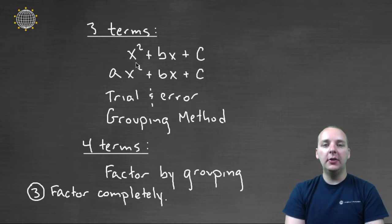And so for either of these, you can either use the trial and error method, where you basically just set up your empty parentheses and try to think about what would foil to give you these trinomials. Or especially for this method with the leading coefficient of A, the grouping method could be helpful.